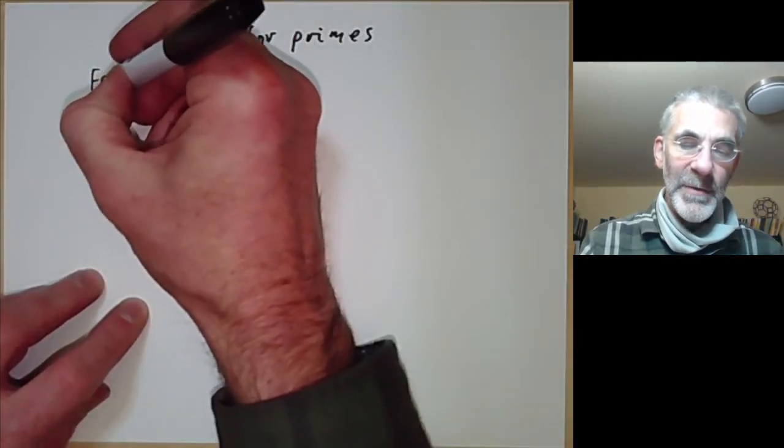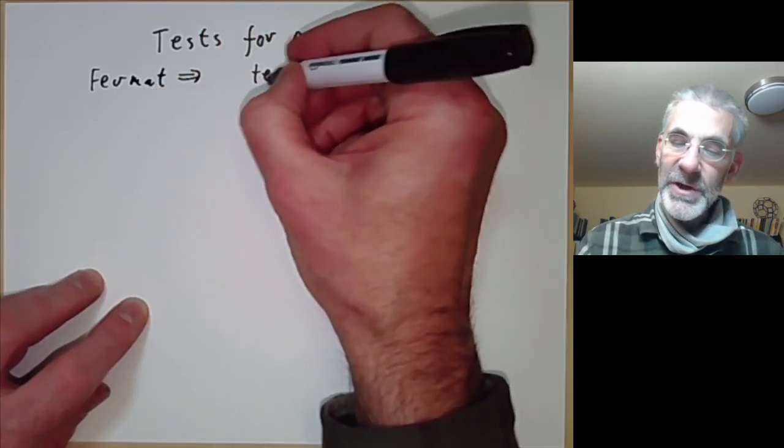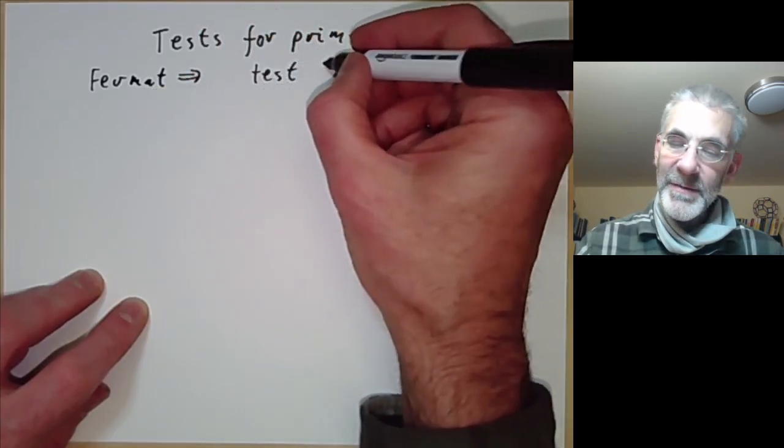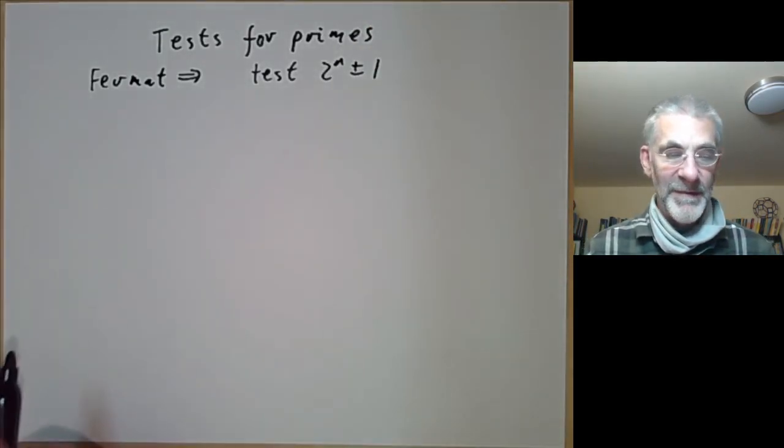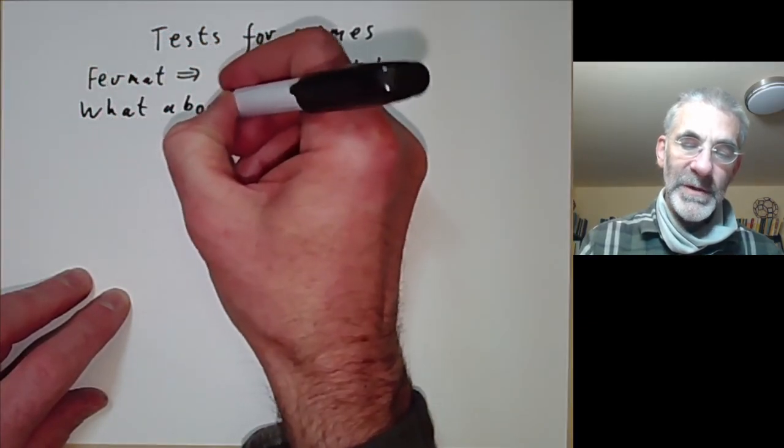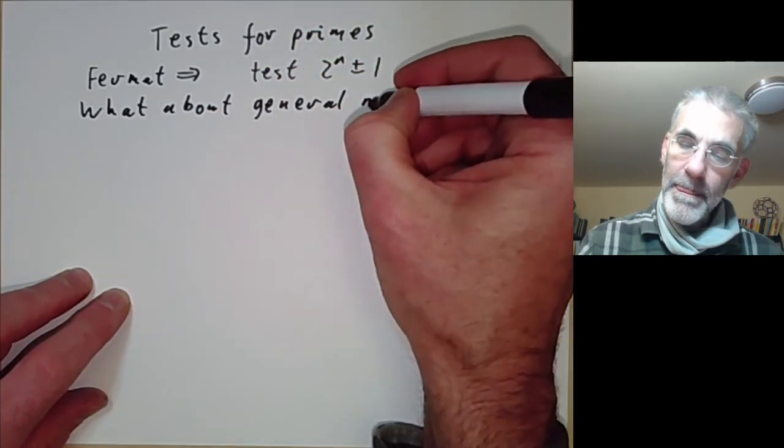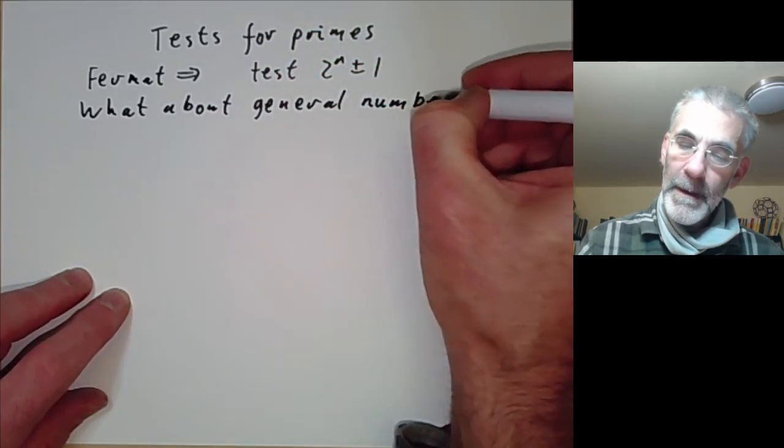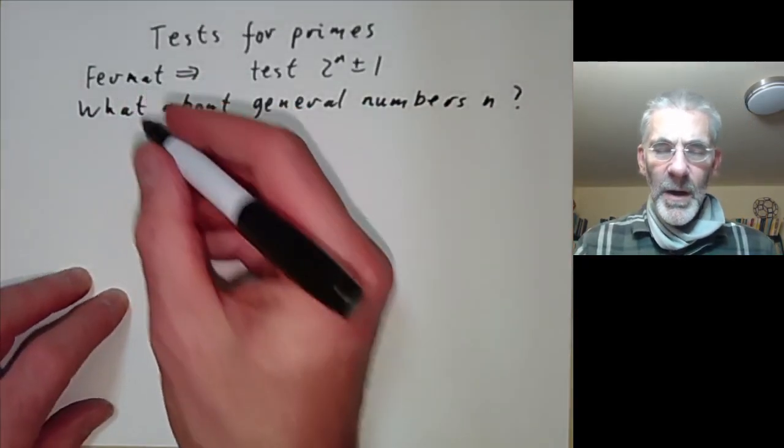So the last lecture we used Fermat's theorem to show that we could use it to speed up testing numbers of the special form 2 to the n plus or minus 1 to see if they're prime. And what we're going to discuss is, what about general numbers n? Suppose n doesn't have any special form.